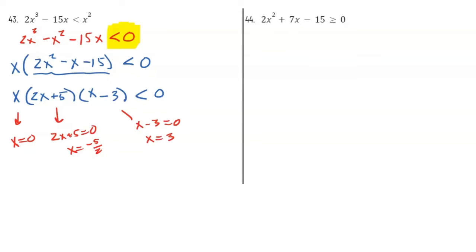Now, a lot of kids try to do something wrong here — they'll try to set each factor as an inequality. No, no, no. The next step is just finding those roots or zeros: 0, −5/2, and 3. Those are just your critical values.